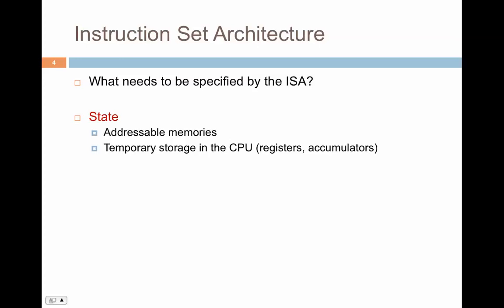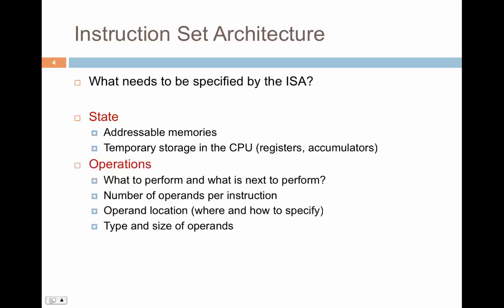The next thing to specify in the instruction set is what exact operations you need it to perform: addition, subtraction, multiplication, division, logical operations, shifting operations, and moving data variables. You also need to specify the number of operands per instruction and the operand location — operands can be specified in the instruction itself, in registers, or via indirect or direct addressing.